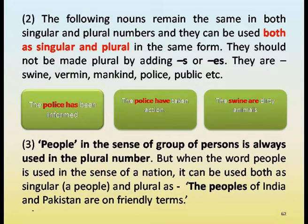Some nouns remain the same in both singular and plural numbers and should not be made plural by adding S or ES. They are: swine, vermin, mankind, police, public, etc. People in the sense of a group of persons is always plural. But when used in the sense of a nation, it can be singular — 'a people' — or plural — 'the peoples of India and Pakistan are on friendly terms.'